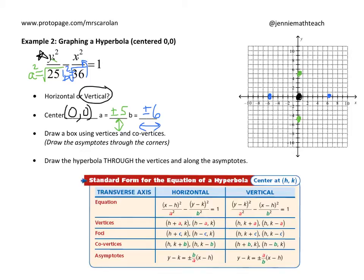Now the fun part — we connect those dots with a dotted box. Once you have that, you connect the corners of the box to form the asymptotes.